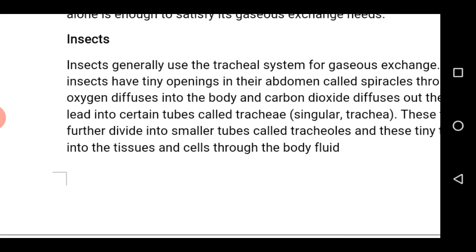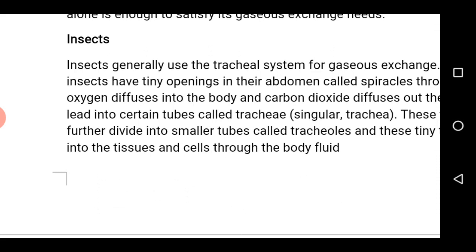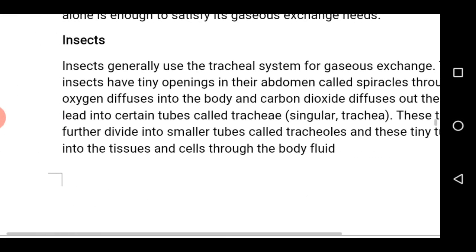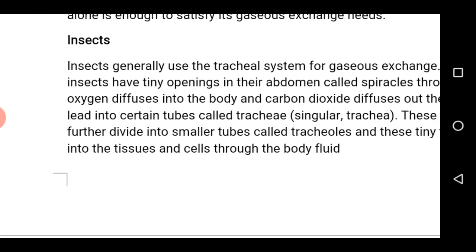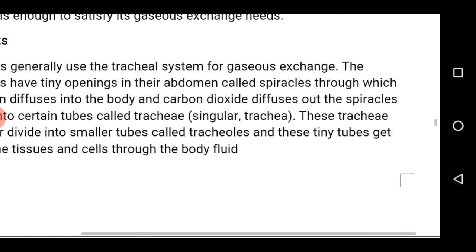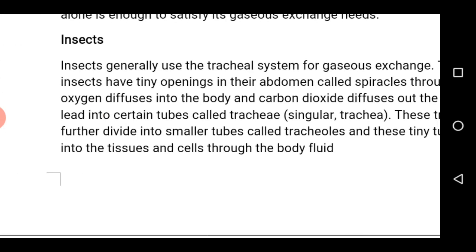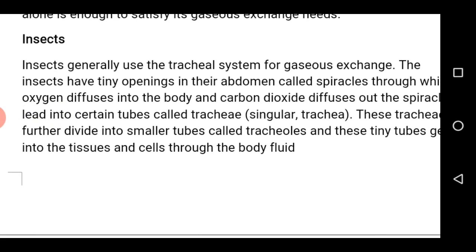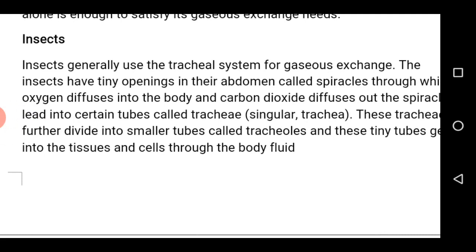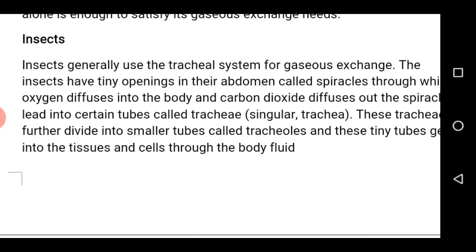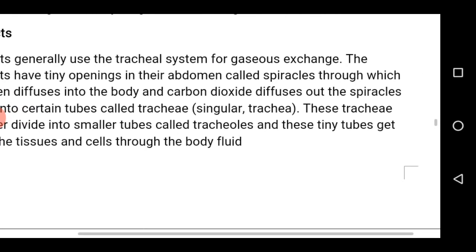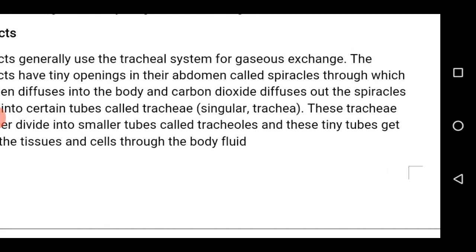Insects. Insects generally use the tracheal system for their gaseous exchange. These organisms have tiny openings on their abdominal region called spiracles, through which oxygen diffuses into the body and carbon dioxide diffuses out. These spiracles lead to the trachea internally, and the trachea also branches into several tracheoles which enter into every living cell in the organism.